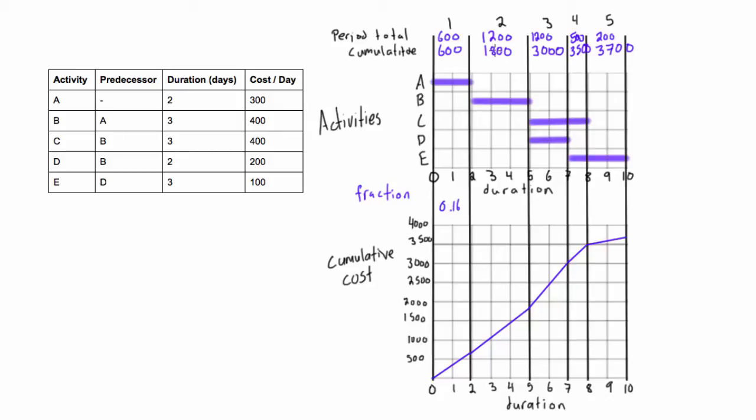And we'll just keep doing that for each cumulative cost. So 1800 divided by 3700, you'll get 0.49. And then if you had 3000 divided by 3700,